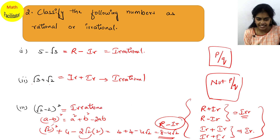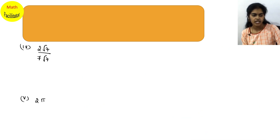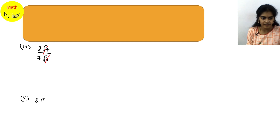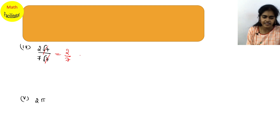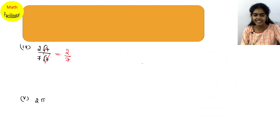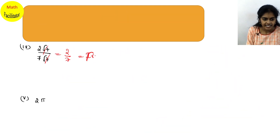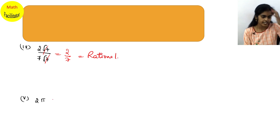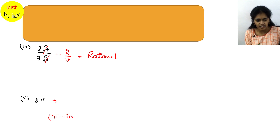Next: 2√7 ÷ 7√7. Here √7 is common in numerator and denominator, so they cancel, giving 2/7. Since 2/7 is in the form p/q, it is a rational number.